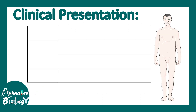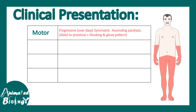The clinical presentations include, for the motor system, an ascending paralysis which is symmetric and progressing over days. The pattern is distal to proximal, usually known as the stocking and glove pattern. In severe cases, this paralysis can ascend further and involve the muscles of respiration and diaphragm, which can lead to severe respiratory problems and death.